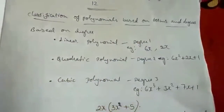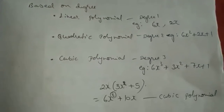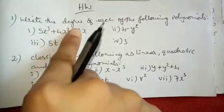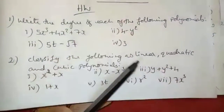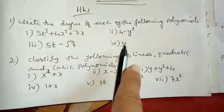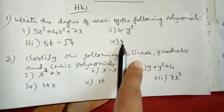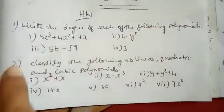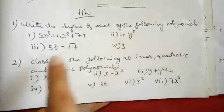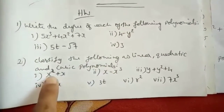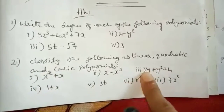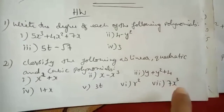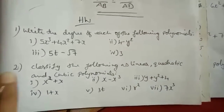Classification based on terms I will explain in my next video. Now take down some homework problems. First question: write the degree of each of the following polynomials — (1) 5x³ plus 4x² plus 7x, (2) 4 minus y², (3) 5t minus root 7, (4) 3. For number 4, only a constant is there, no variable, so the degree will be 0 — because it is understood as x power 0. Second question: classify the following as linear, quadratic, and cubic polynomials — (1) x² plus x, (2) x minus x³, (3) y plus y² plus 4, (4) 1 plus x, (5) 3t, (6) r², (7) 7x³. Solve these in your homework book. Thank you.